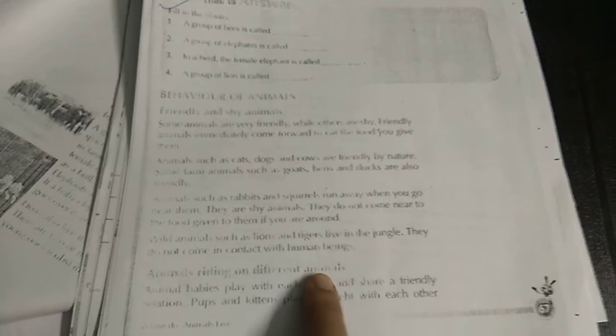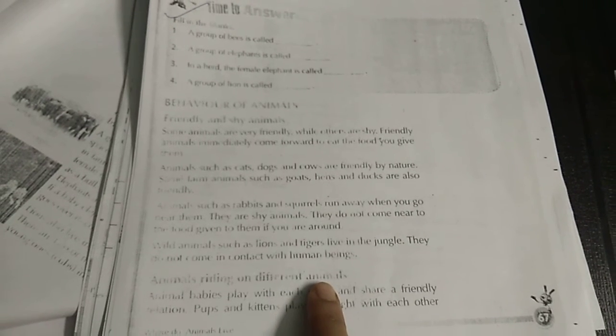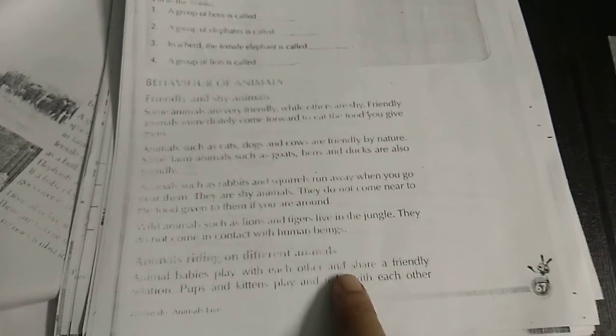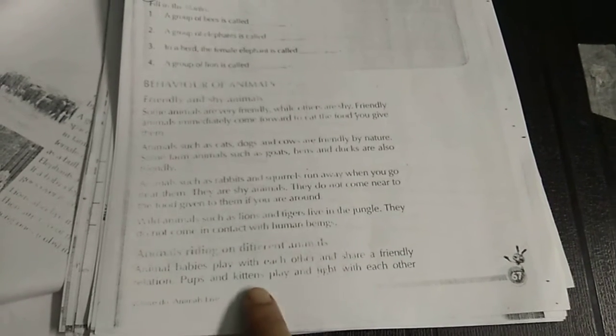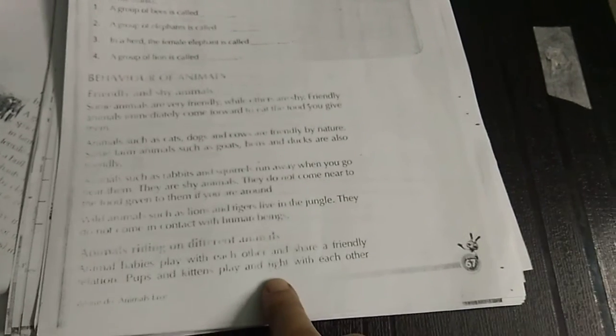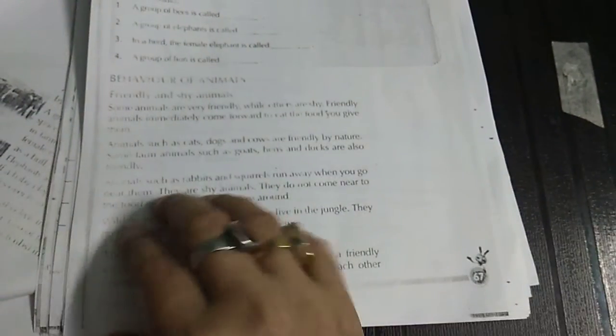Animals riding on different animals. Animals that sit on different animals' back. Animal babies play with each other and share a friendly relation. Pup and kitten play with each other.